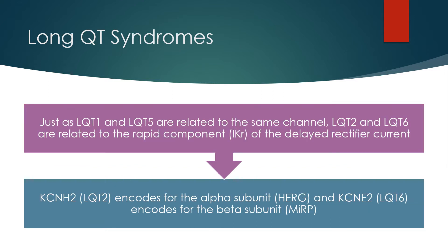Just as LQT1 and LQT5 are related to the same channel, LQT2 and LQT6 are related to the rapid component of the delayed rectifier current. KCNH2 encodes for the alpha subunit and KCNE2 encodes for the beta subunit.